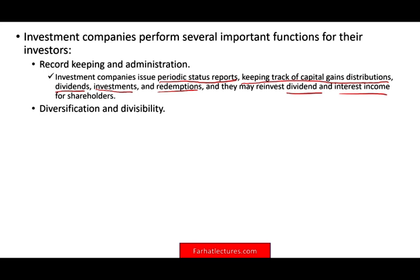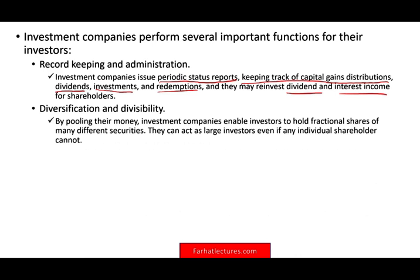Investment companies also provide diversification and divisibility. By pooling all this money together, they enable investors to hold fractional shares of many different securities. For example, if you give them $100, that $100 is in theory invested in many different companies. If you had that $100 yourself, you could not buy 10 different companies — but through the investment company, you are invested in all of them. They act as a large investor even though individual investors cannot.